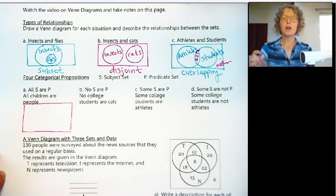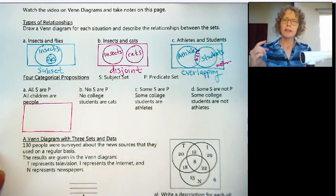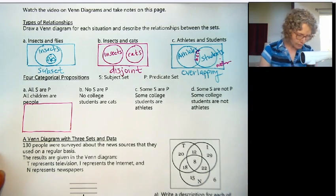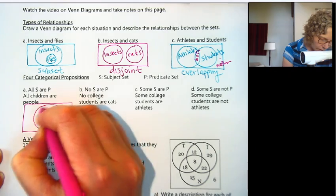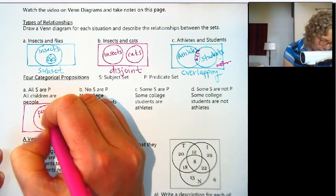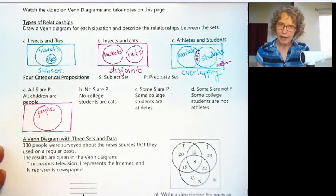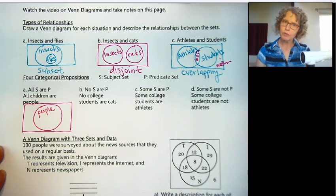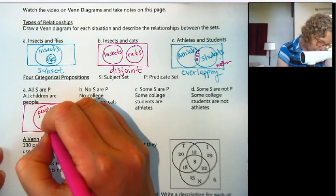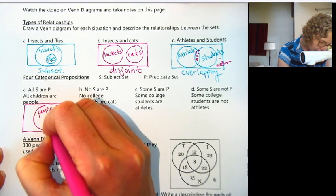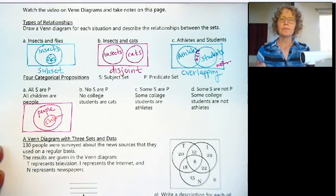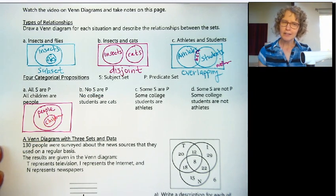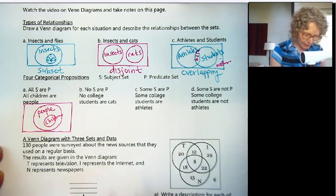All children are people means that is a subset. People is the larger set and all children are people, so children would be the subset. When you hear 'all,' that sounds like a subset.